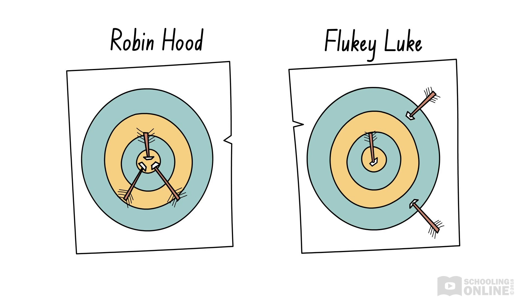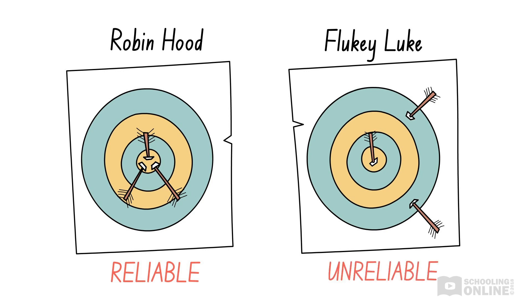As we can see, Robin Hood is the more reliable archer, as he consistently hits the bullseye. Compared to Robin Hood, Fluky Luke is less reliable.